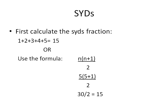The first thing we need to do is calculate the sum of the years' digits fraction. There are two ways to do that. We can either add the digits: 1 plus 2 plus 3 plus 4 plus 5 equals 15. Or we can use the formula n times (n plus 1) divided by 2. In this case, that's 5 times 6 divided by 2, which is 15. So we arrive at the sum of the years' digits of 15 either way.